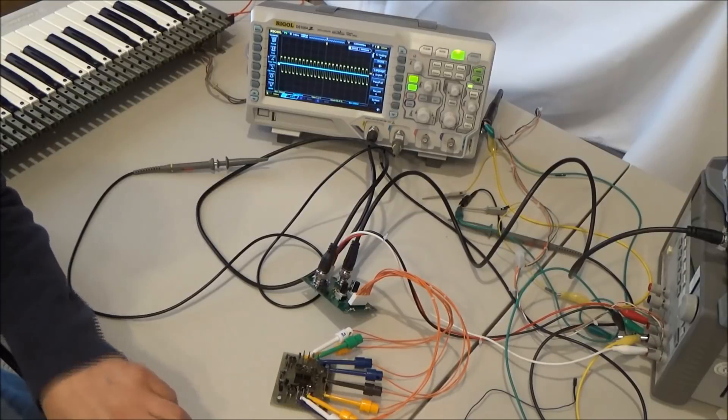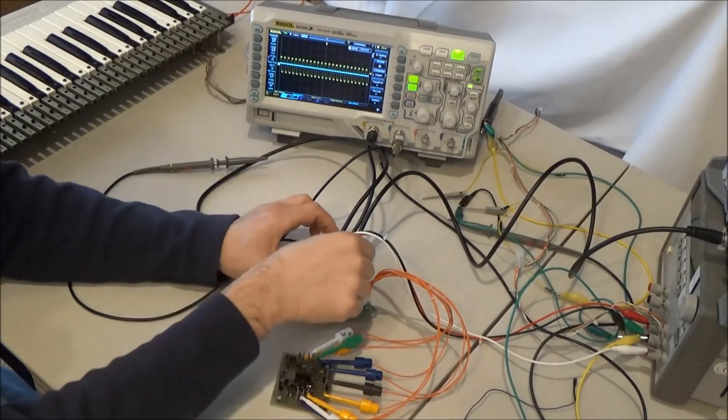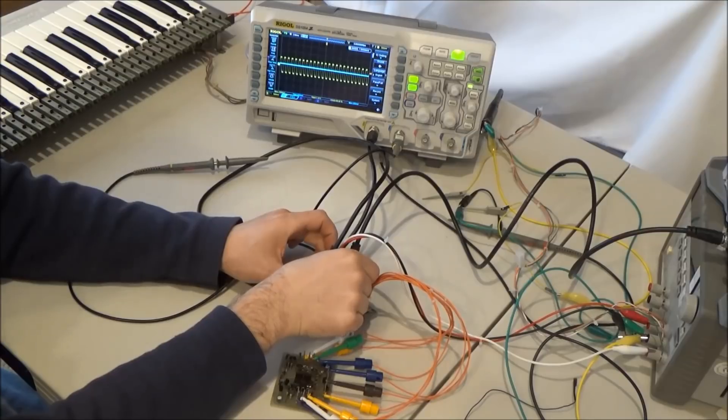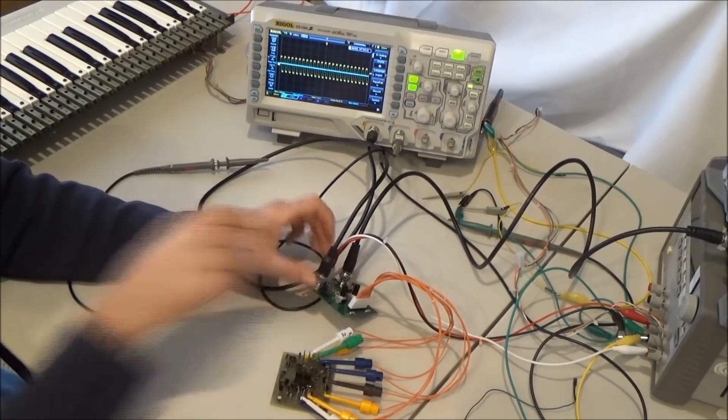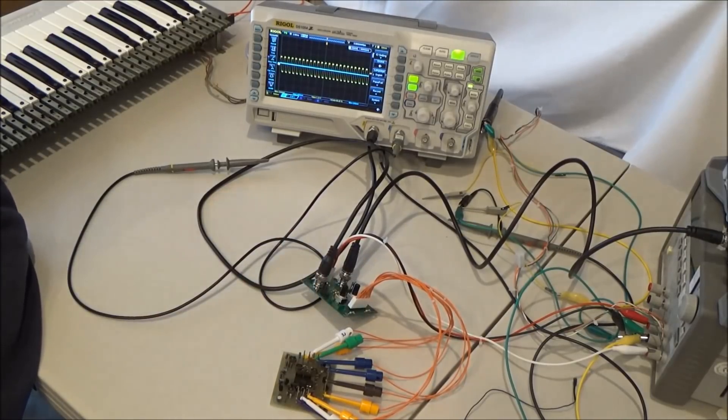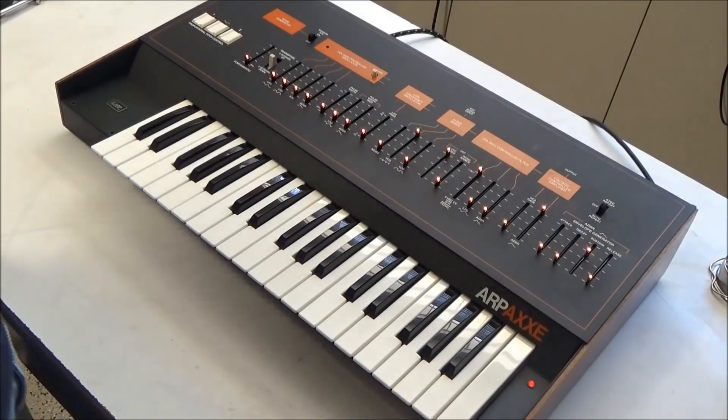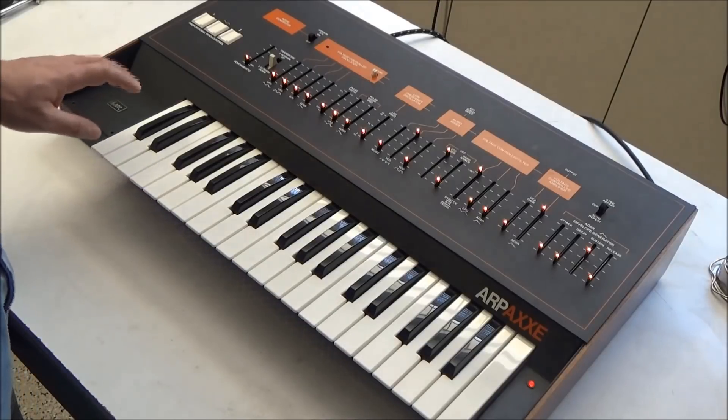Alright, with the new transistor in, I've got the filter back in the test fixture. And now, lo and behold, when I lower the cutoff frequency, it's filtering. So let's get this into the synthesizer and actually hear it now. So I put the filter back in and I was able to calibrate it. And now it's working as it should.